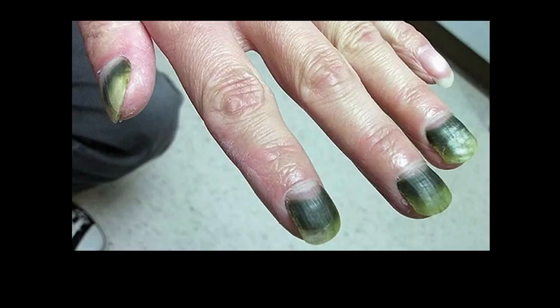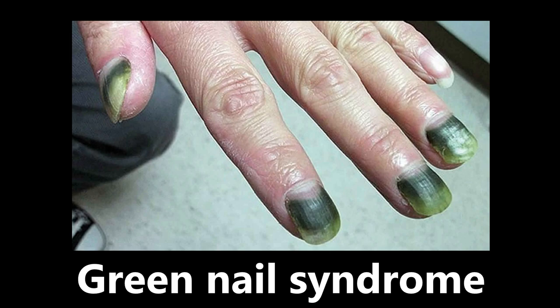Next image — a little bit gross — but this is exactly what it looks like: it's green nail syndrome. You can see the nails are very much green here. Basically, this is a chronic infection of the nail bed that leads to green-black discoloration. The most common cause of green nail syndrome is Pseudomonas aeruginosa. So if you see any mention of this, if you see a picture of green nail syndrome, you want to be thinking Pseudomonas.